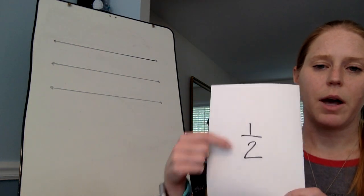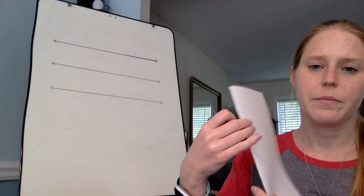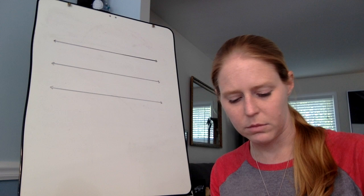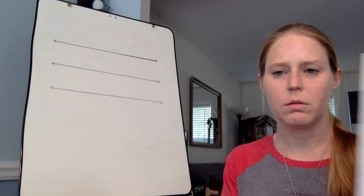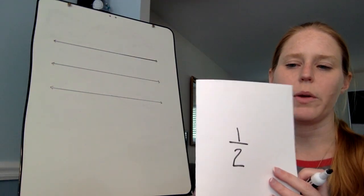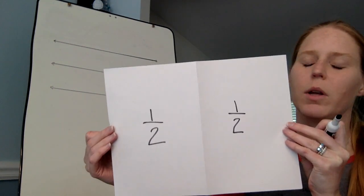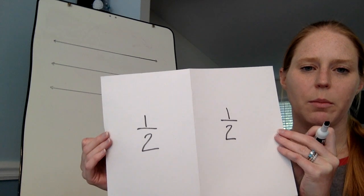So I have one out of the two pieces showing. I flip it over, I have one of the two pieces showing, and if I put these one half and one half together, I make up the whole shape.